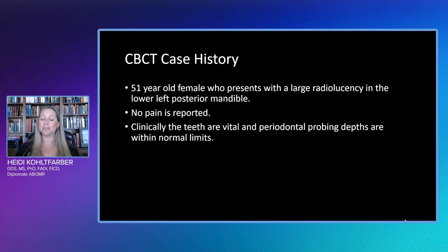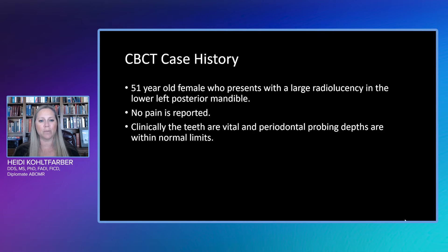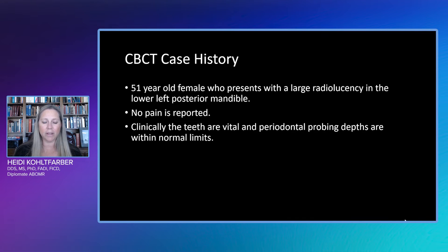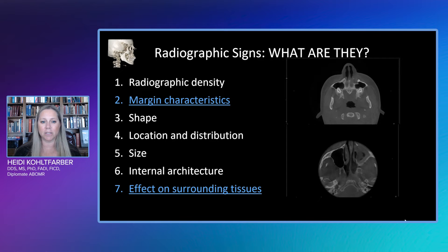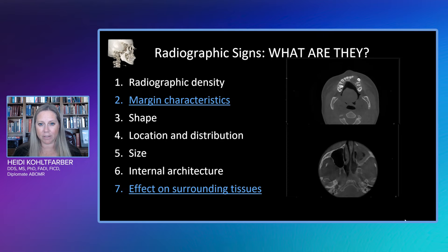Reviewing the CBCT that was sent to us, this is the history we were given: a 51-year-old female who presents with a large radiolucency in the lower left posterior mandible. No pain is reported, and clinically the teeth are vital, and periodontal probing depths are within normal limits. When we see a lesion with our CBCTs, we want to evaluate it utilizing our radiographic signs.